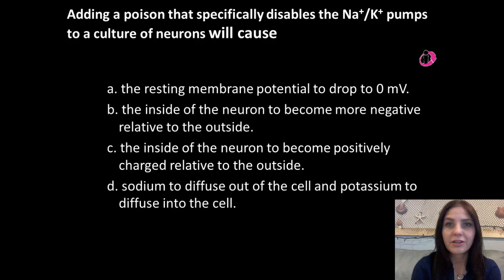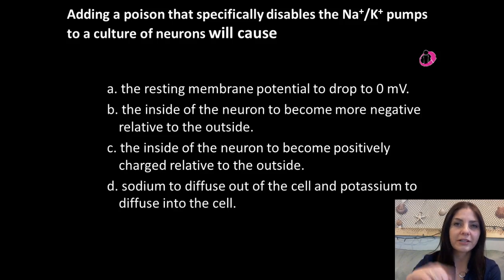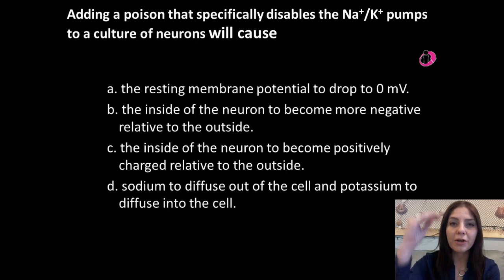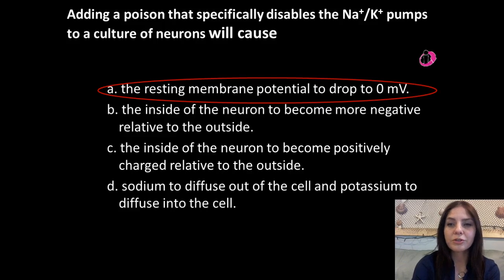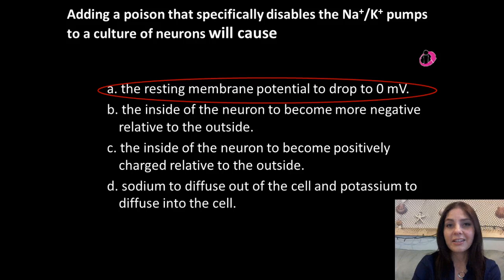The next scenario is something you might see on a free response question: what would happen if you added a poison that specifically disabled the sodium-potassium pump to a culture of neurons? Think about what the sodium-potassium pump does — it pumps sodium out of the cell and potassium inside the cell, requiring energy because it works against the concentration gradient. If you chose A, you're correct. The resting membrane potential would drop to zero millivolts, because without the pump, only passive transport of ions would occur and they would level out to a net charge of zero. This means no impulses get sent down the axon, preventing signals from reaching the brain.